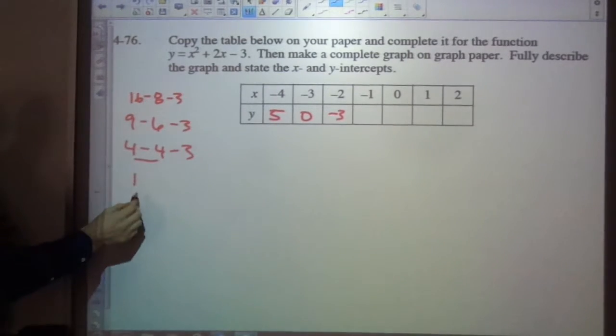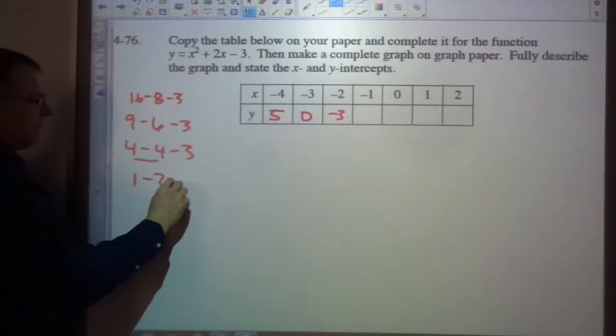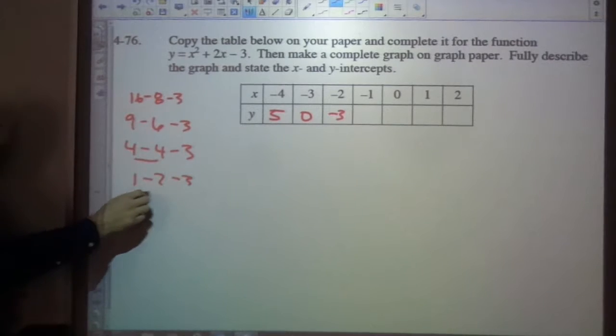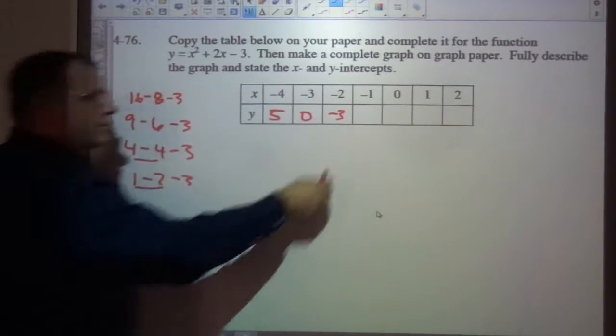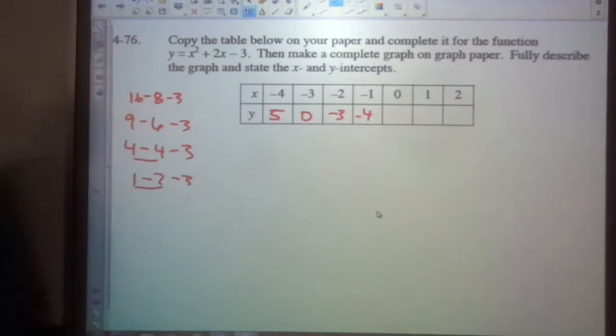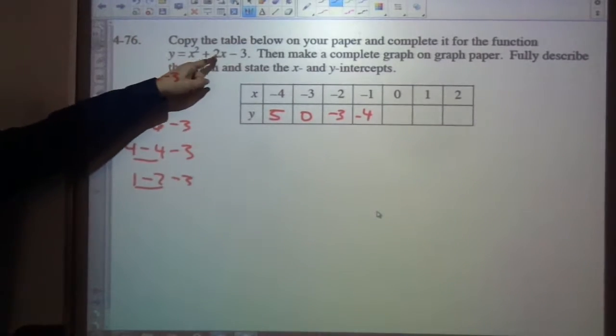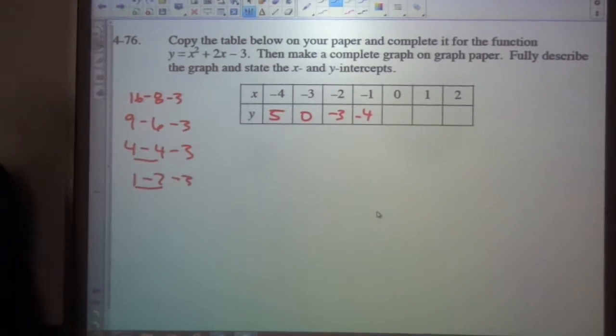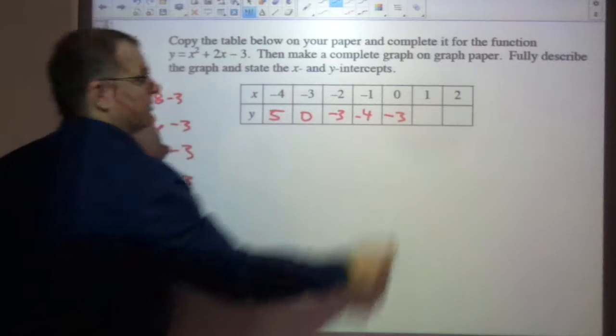Negative 1 squared minus 2 minus 3. That's negative 1 minus 3 which is negative 4. 0 plus 0 minus 3, it's starting to come back up.